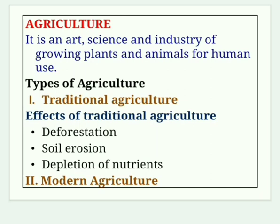Traditional agriculture involves small plots, simple tools, surface water, organic fertilizer and a mixture of crops, and is very close to natural conditions with only low production. Effects include: deforestation — cutting and burning trees to clear land for cultivation; soil erosion — clearing forest exposes soil to wind, eroding the fertile top layer; and depletion of nutrients — cutting and burning destroys organic matter, so nutrients are taken up by crops within a short period, decreasing nutrient content.